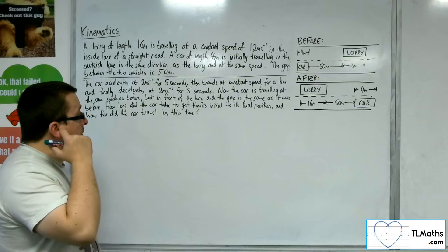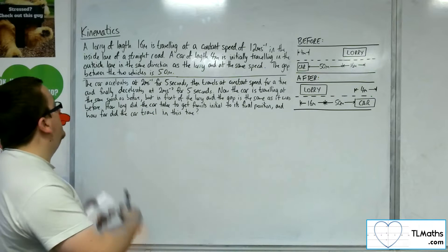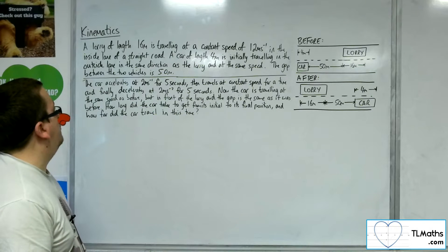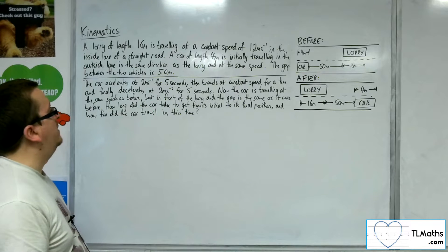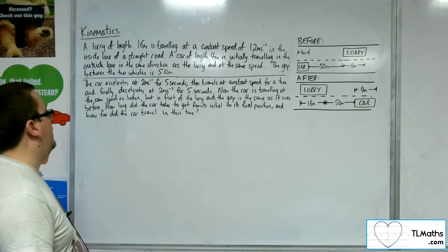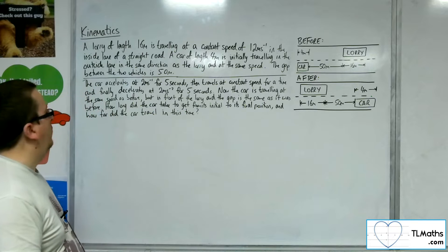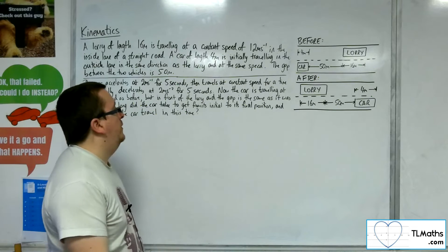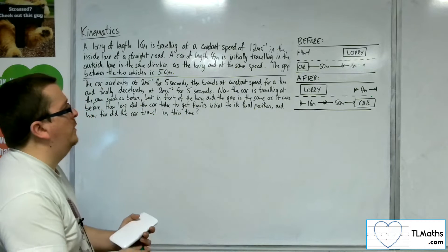The car accelerates, so the car is aiming to overtake the lorry. The car accelerates at 2 metres per second squared for 5 seconds, then travels at constant speed for a time, and finally decelerates at 2 metres per second squared for 5 seconds. Now the car is travelling at the same speed as before, but in front of the lorry, and the gap is the same as it was before. How long did the car take to get from its initial to its final position, and how far did the car travel in this time?